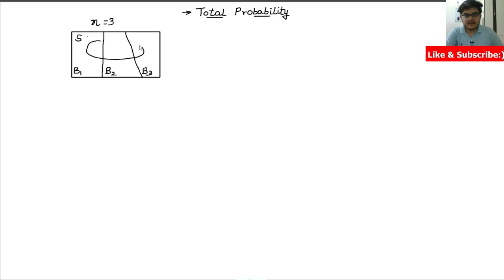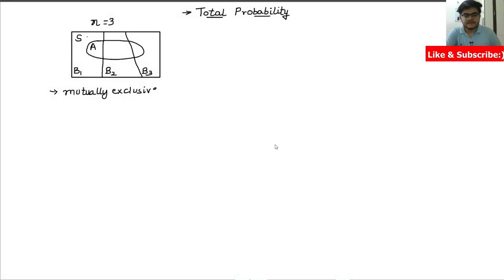I'm going to show that if I take some event A inside my sample space, I can represent it as the sum of all the probabilities of A intersection B. One important point about all the subsets B1, B2, and B3 is that they are all mutually exclusive — they do not have anything in common. They are disjoint sets, and also exhaustive.